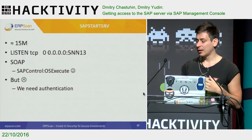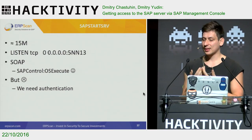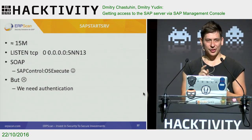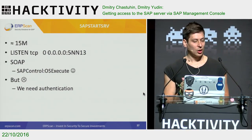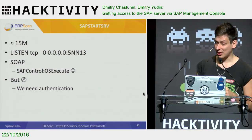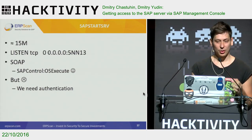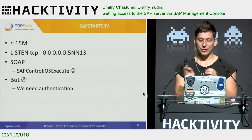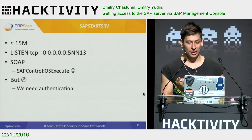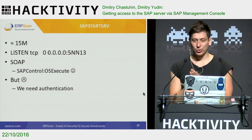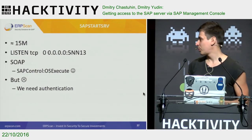So let's put our sapstartsrv binary into the disassembler and look at it. sapstartsrv has a size of 15 megabytes, uses port 50013, which is accessible via HTTP requests. An interesting thing: this port is also available when the main SAP services are switched off. SAP Management Console has a lot of interesting SOAP methods — one of them is the OS execute method, which allows execution of operating system level commands. That's exactly what we need. But we need to solve one little problem: bypass authentication.